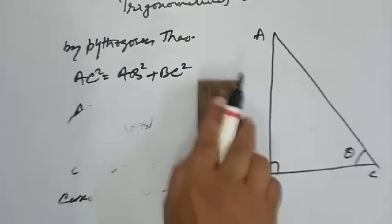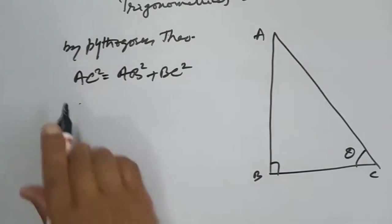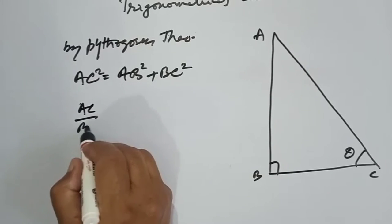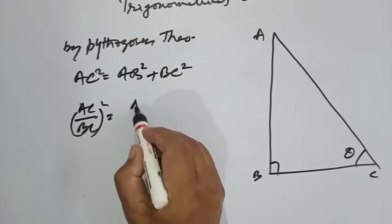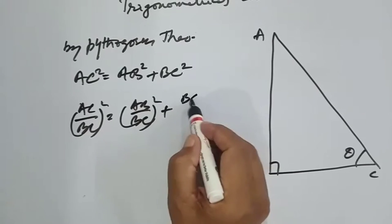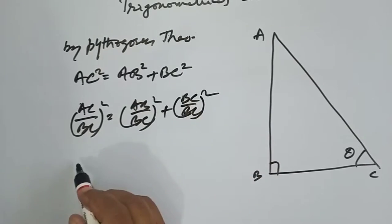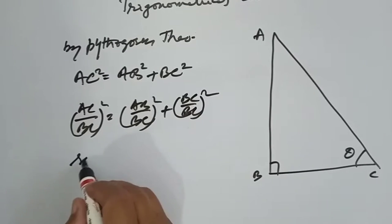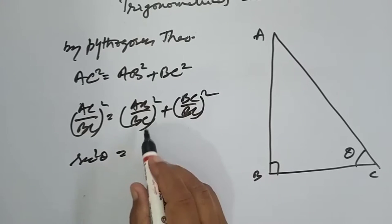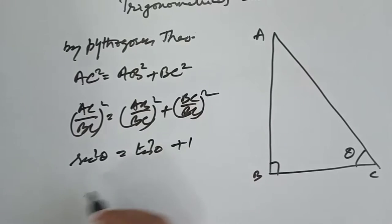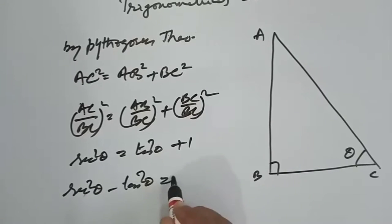Now we try to prove the third identity. We divide the equation by BC square. We get AC upon BC, the whole square, is equal to AB upon BC, the whole square, plus BC upon BC, the whole square. AC upon BC is cosec theta and AB upon BC is cot theta, plus 1. So the third identity is cosec squared theta minus cot squared theta is equal to 1.